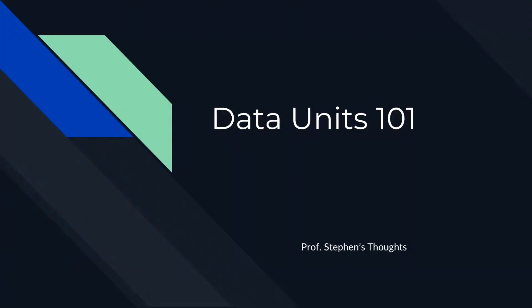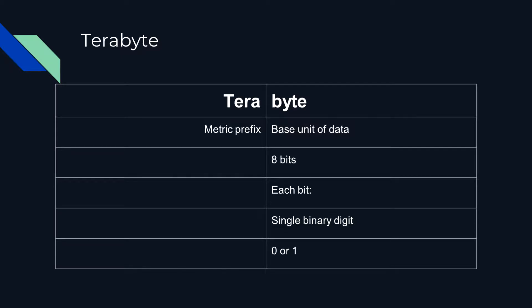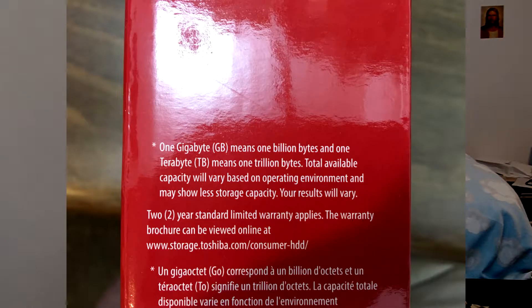Toshiba advertised that this drive has three terabytes of space. Let's have a look at the unit they provided. The latter half, 'byte,' is the base unit of data, comprised of 8 bits, each bit being a single binary digit, 0 or 1. The former half, 'tera,' is a metric prefix that means 10 to the 12th power, which can also be expressed as 1000 to the 4th power, or 1 trillion. This is the definition that Toshiba uses, and it says so right on the box.